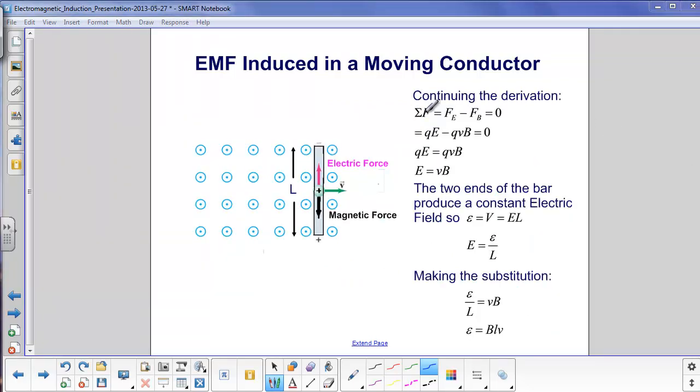Continuing the derivation from the previous page, this is where we left off. The sum of the forces is the force through the electric field minus the force through the magnetic field equal to zero. We know that force electric field is QE. Force magnetic field is QVB. So we put them in, we put QVB on the other side, we divide through by Q, and we come up with this equation here. The electric field is equal to the velocity of the bar times the magnetic field.